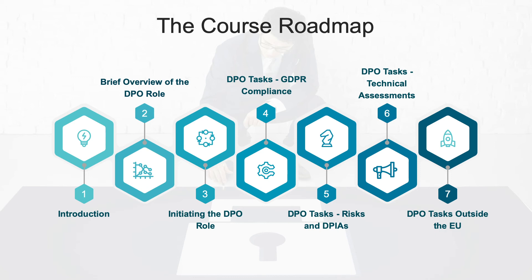In section 5, we will continue with risk-related DPO tasks including risk identification, analysis, evaluation, and treatment, and we will define the concept of data protection impact assessment or DPIA. Technical assessments are further analyzed in section 6, including ISO or NIST related controls, data breaches, responses, and severity. DPO tasks outside the European Union is the topic for our last section, section 7.